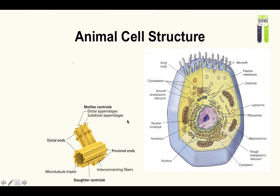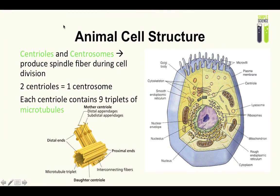Speaking of centrioles, here we are: centrioles and centrosomes. They produce spindle fiber during cell division, which you will cover during your cell division topic. To break it down, make it simple: two centrioles make one centrosome and each centriole contains nine triplets of microtubules. Here you can see a microtubule triplet, so very small things.